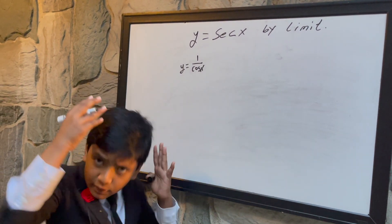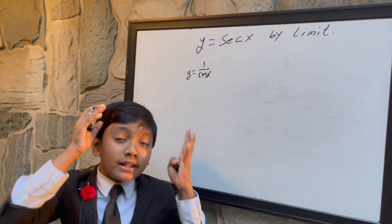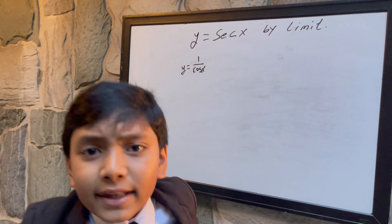Wait, but we've already taken the derivative of 1 over x, and we've taken the derivative of cosine of x. So, this should be easy, right? Right.